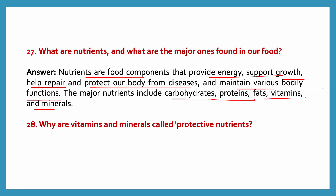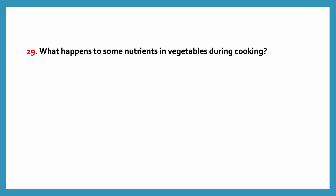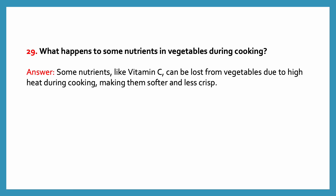Why are vitamins and minerals called protective nutrients? They are called protective nutrients because they safeguard our body from various diseases and keep us healthy. Some nutrients like vitamin C can be lost from vegetables due to high heat during cooking, making them softer and less crisp.